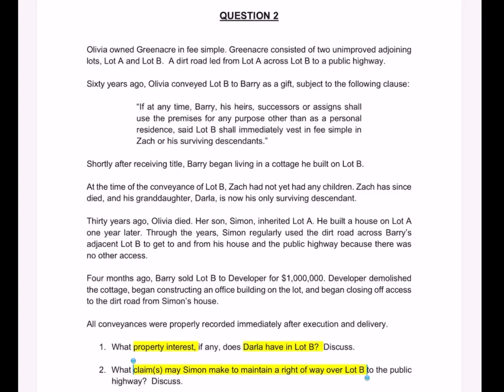The only other thing it could be, in my experience with a whole bunch of fact patterns, would be some kind of a crossover with wills or trusts, depending on how Darla acquired her interest in Lot B. Sometimes the bar gives us that kind of crossover. What I am pretty sure about is that call two is about easements.